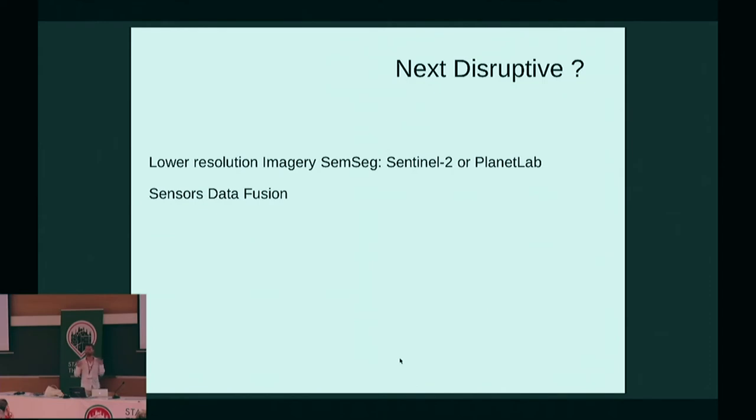What would be the next descriptive point? It would be to have lower resolution imagery semantic segmentation, for example on Sentinel-2 or Planet Lab, or to achieve that with different kinds of sensors, not only aerial imagery but, for instance, aerial imagery and GPS tracks.